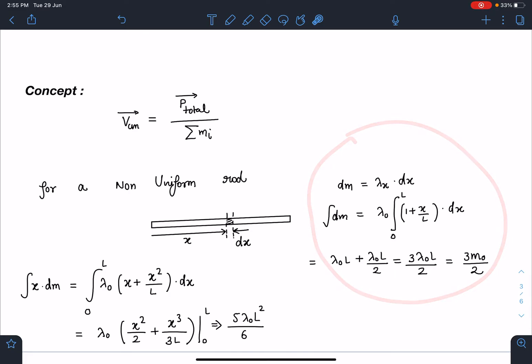Integral dm is nothing but the total mass which can be calculated as lambda x dx and we have measured this x from end A. When I substitute the value, I am going to get this value as 3 lambda naught L by 2, and lambda naught L is given as M0. So this value will become 3M0 by 2. Similarly, I can find out integral xdm. This is going to be 0 to L, lambda x value also I am substituting, and basically this is x times lambda x dx. When I simplify this, I am going to get 5 lambda naught L square by 6.